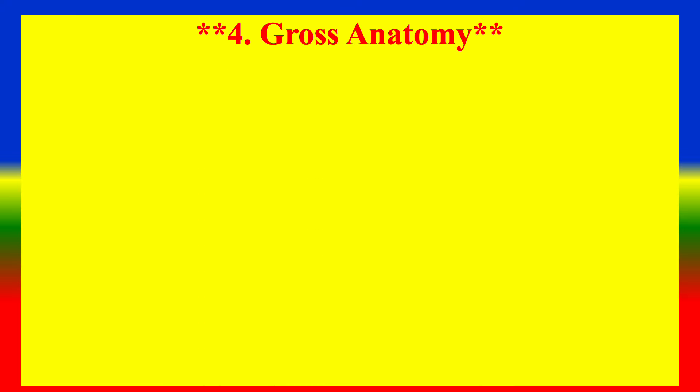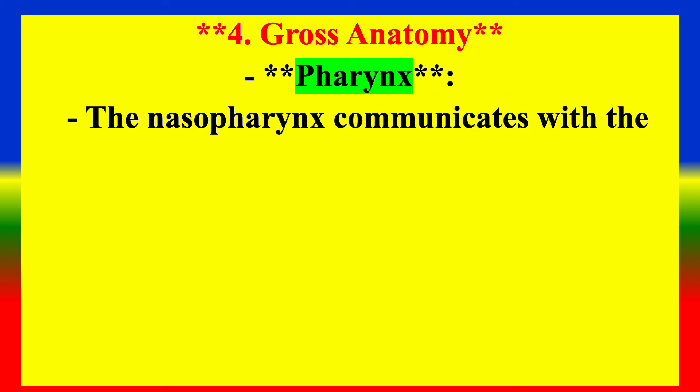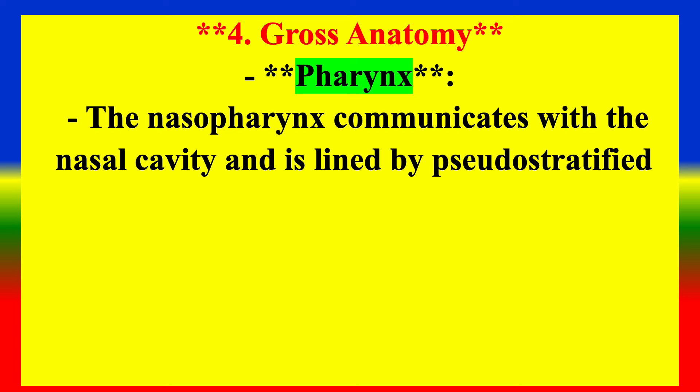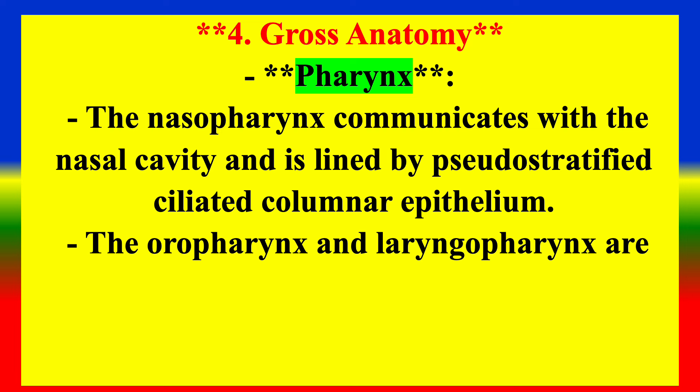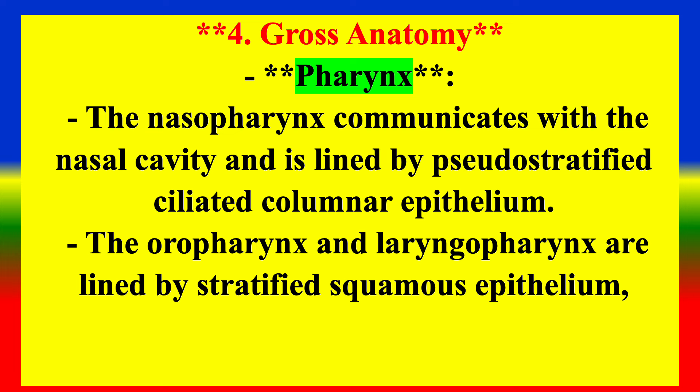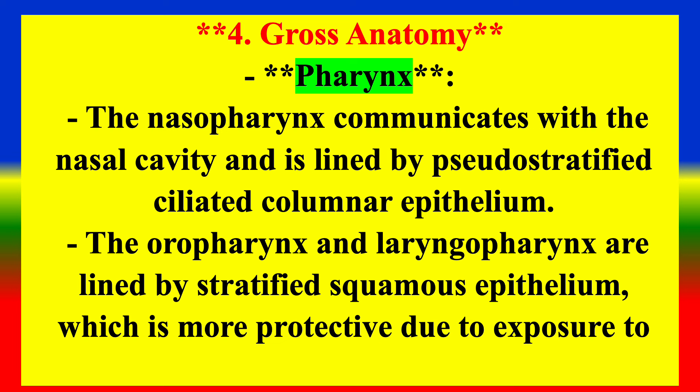Cross Anatomy — Pharynx: The nasopharynx communicates with the nasal cavity and is lined by pseudostratified ciliated columnar epithelium. The oropharynx and laryngopharynx are lined by stratified squamous epithelium, which is more protective due to exposure to food particles.